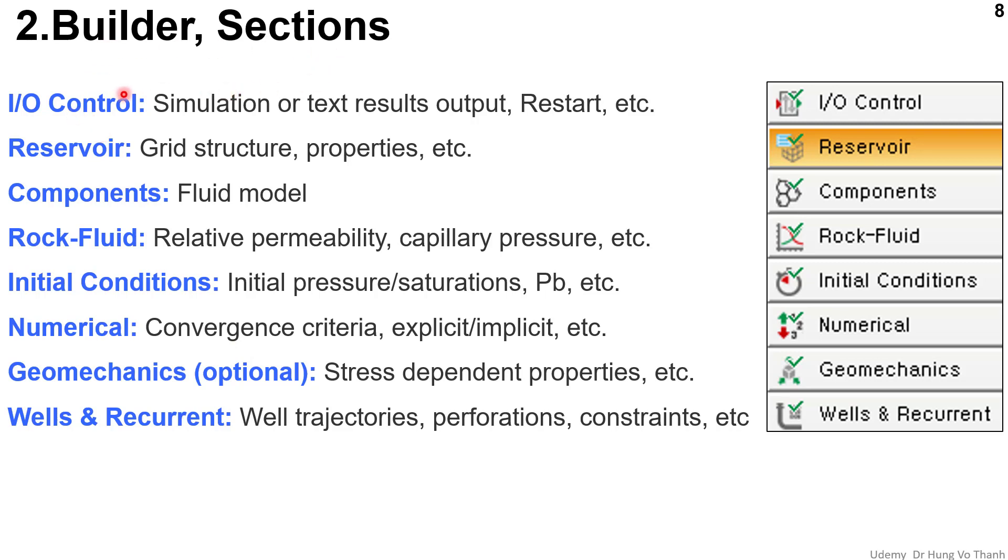This is the general information you need to import one by one before you start running the simulation data. First, I talked about the Input Output Control. In this option, you can define the simulation or state result output you defined on your selection. So whatever you define here, the simulation result will work for you.